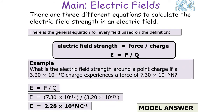There are three different equations to calculate the electrical field strength in an electrical field. The first equation is the general equation for every field, based on the fundamental definition: electrical field strength is force divided by charge, so E equals F over Q. For example, you could be asked: what is the electrical field strength around a point charge if a 3.20 × 10⁻¹⁹ coulomb charge experiences a force of 7.30 × 10⁻¹⁵ newtons? You do E equals F over Q, and the answer is 2.28 × 10⁴ newtons per coulomb.